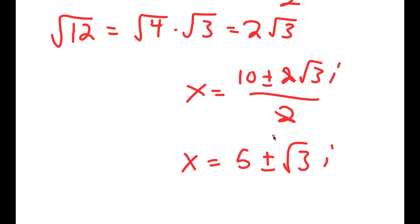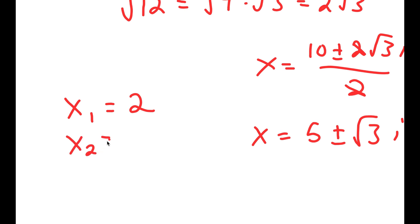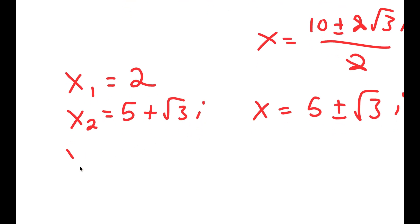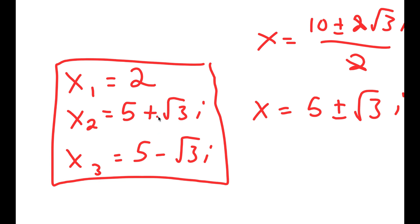So my three solutions are: x equals 2, x equals 5 plus the square root of 3 times i, and x equals 5 minus the square root of 3 times i. Because we have two imaginary solutions, we can't check them in our original equation, but we can check x equals 2.